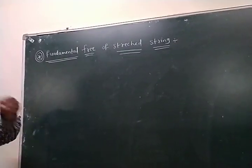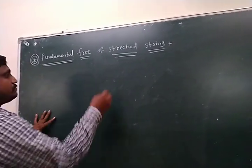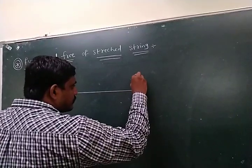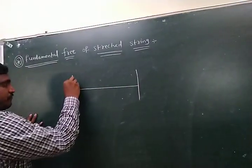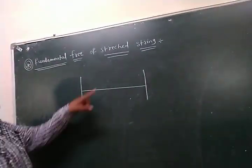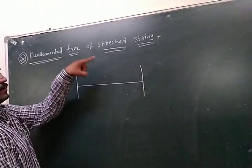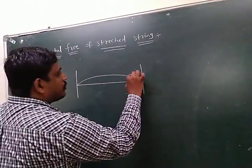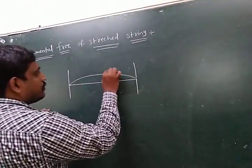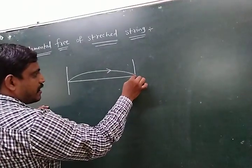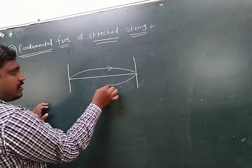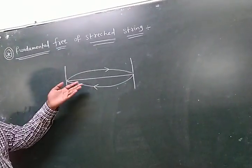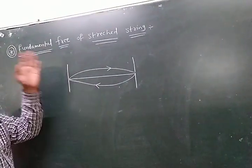Look here. This is the string — both ends fixed. At the middle it will be plucked. The wave propagates from one end to the other end. At the rigid end it will be reflected. This is called a stationary waveform.